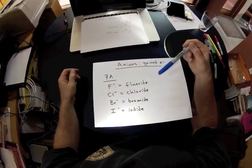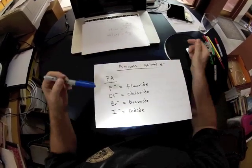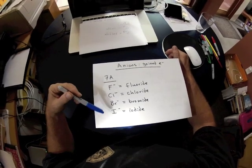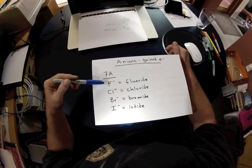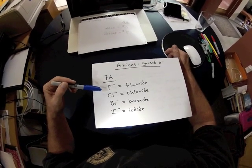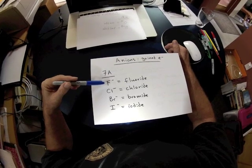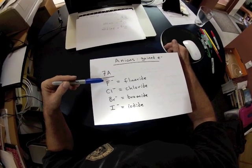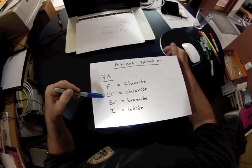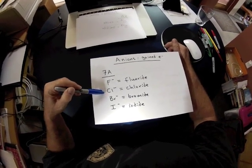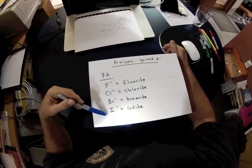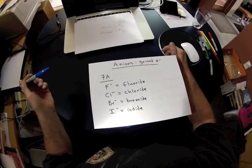We step again to the right into group 7A, and we see that there are going to be four elements that we have to pay attention to: fluorine, chlorine, bromine, and iodine. In the case of those four elements, when they react with some type of a metal, they will take one electron, taking on a charge of minus one. So fluorine becomes fluoride, or F-1. Chlorine becomes chloride, Cl-. Bromine becomes bromide, Br-1. And iodine becomes iodide, or I-1.